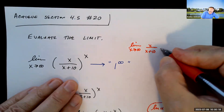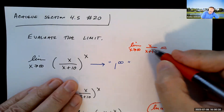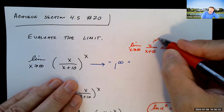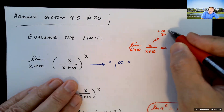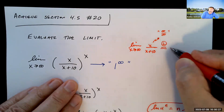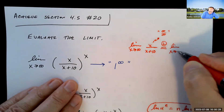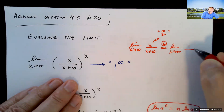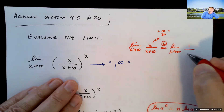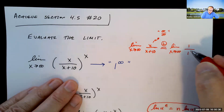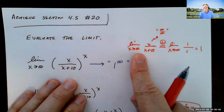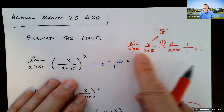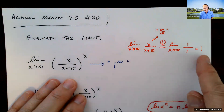If you don't recall that, you could think it's an infinity over infinity form, which is L'Hôpital's rule form. Using L'Hôpital's rule, the derivative of x is 1 and the derivative of x plus 10 is 1, giving the limit as x approaches infinity of 1, which is indeed 1. I hope most of you can immediately deduce that.